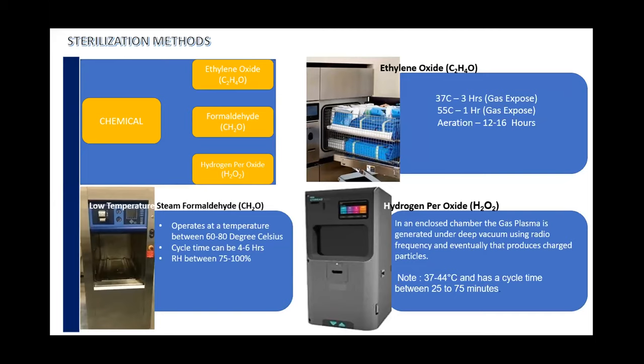We must have seen different kinds of formalin chambers used for sterilizing heat-sensitive or quick-turnaround instruments, where we keep formalin tablets in the chamber and assume it is getting sterilized. Please note: if you want to do formaldehyde sterilization, the minimum relative humidity factor required is 75 to 100%. If we do not have this level of relative humidity, our end product is not getting sterilized.